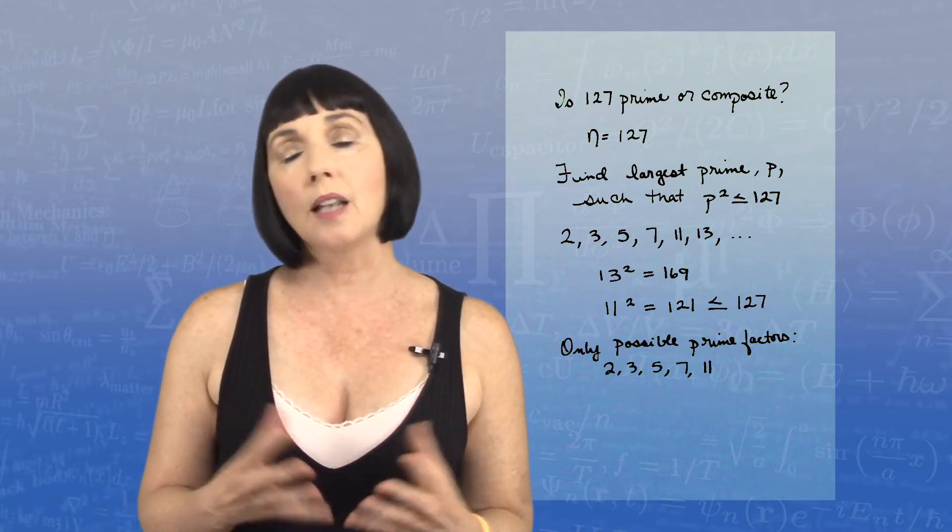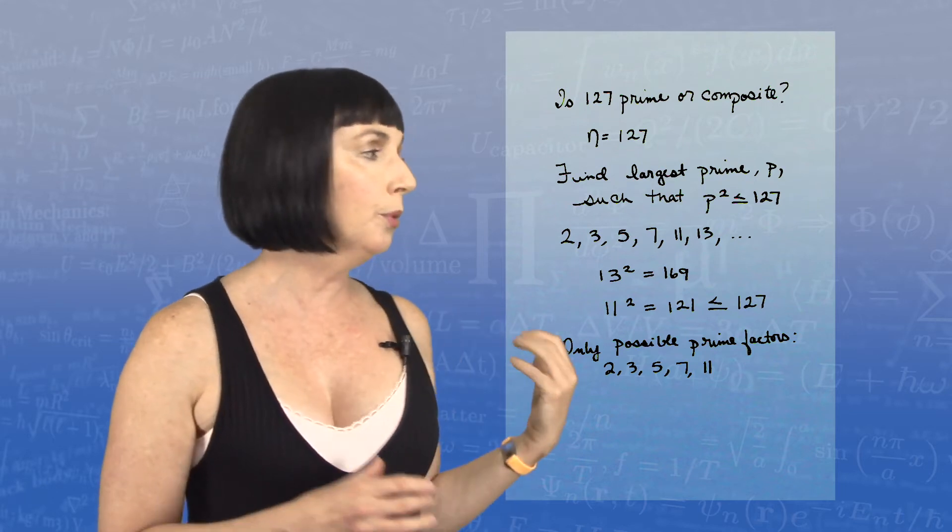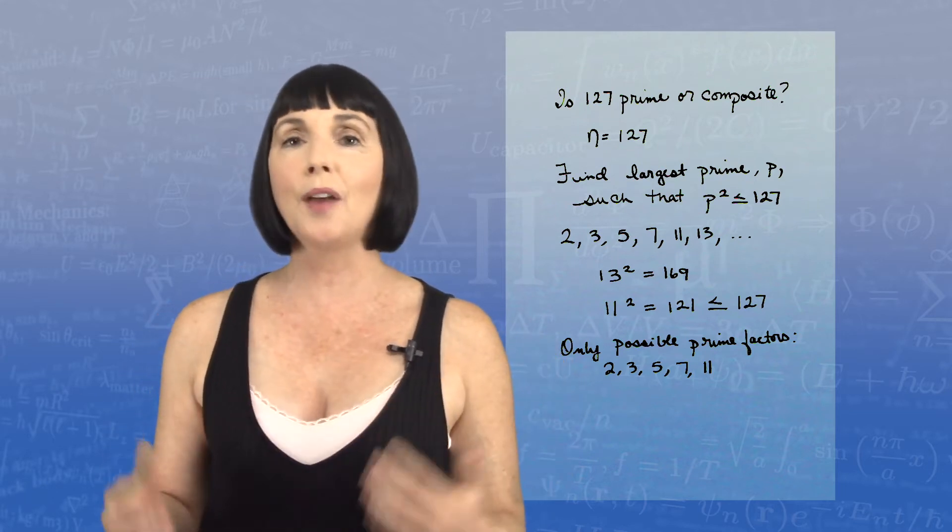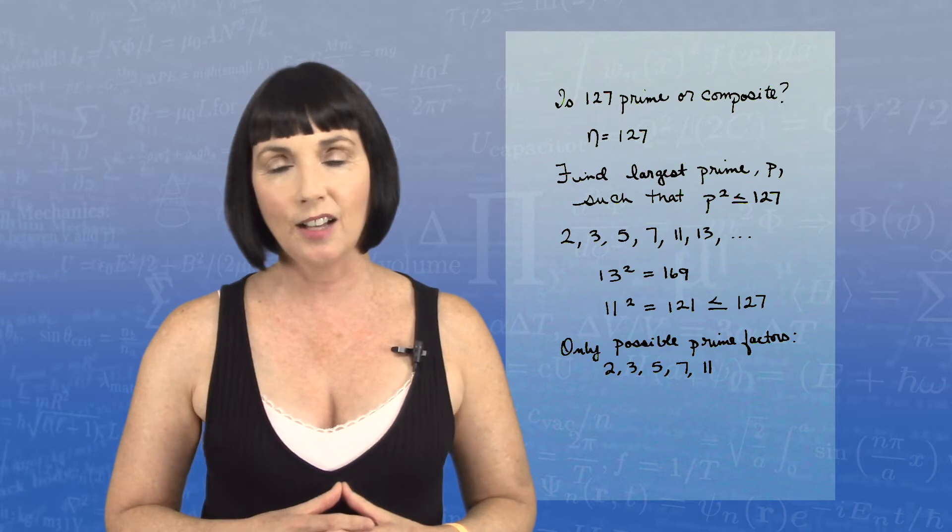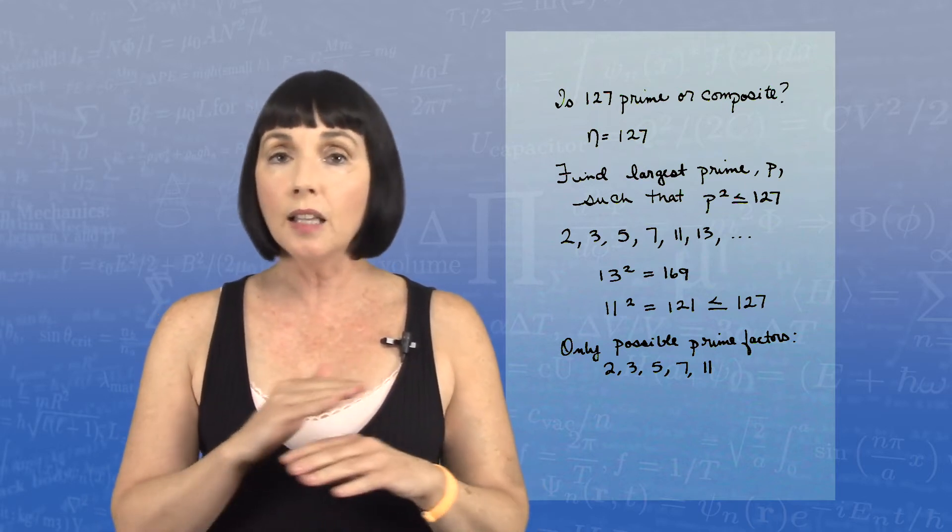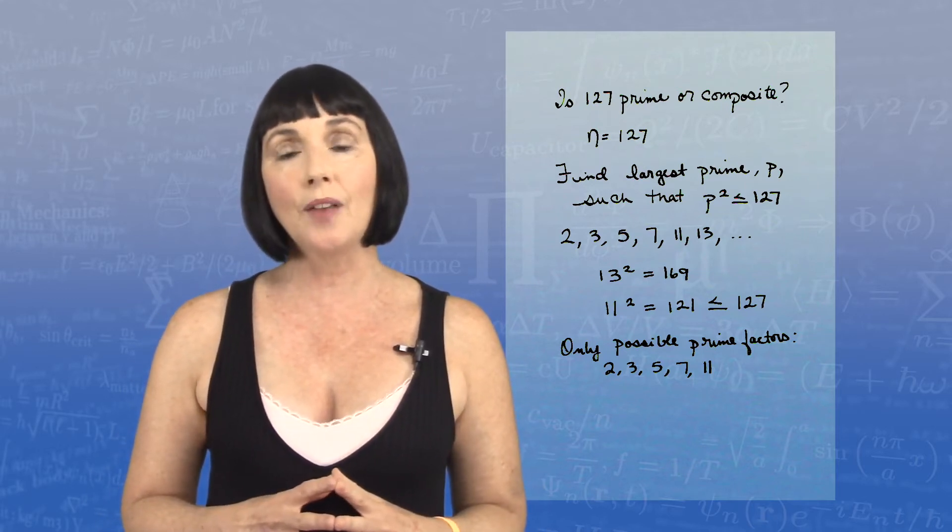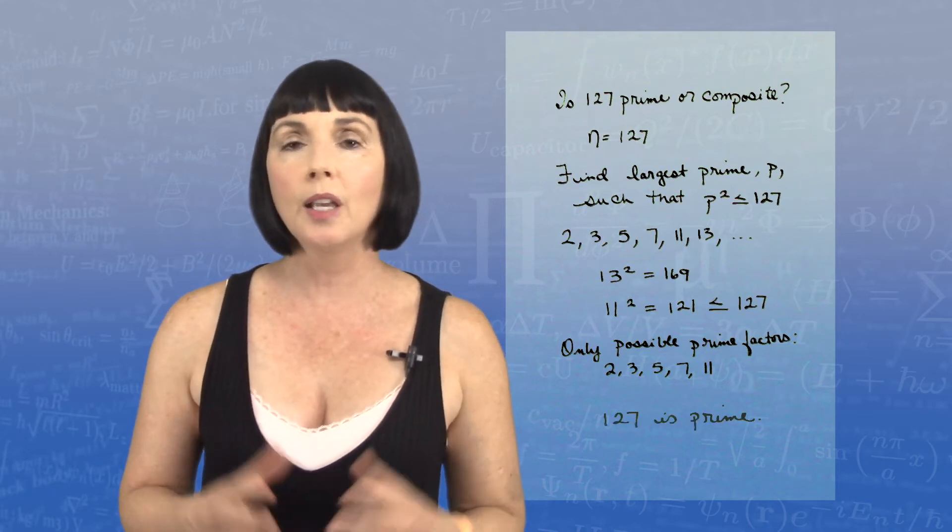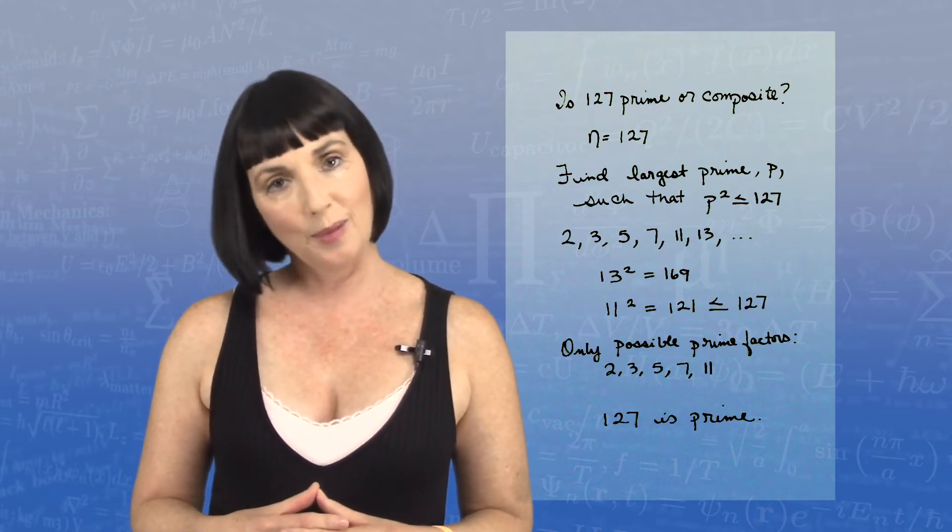Now 127 is not evenly divisible by 2, 3, 5, 7, or 11. If you don't believe me, check it out on a calculator. So since none of those numbers are factors of 127, that means we can conclude that 127 is a prime number.